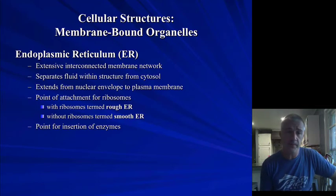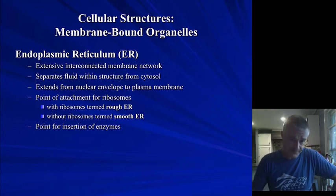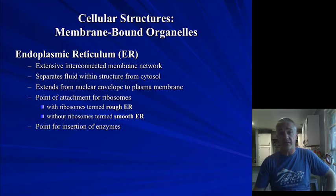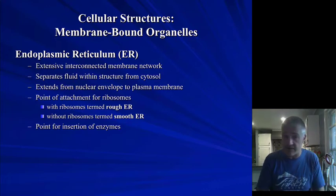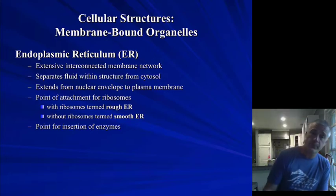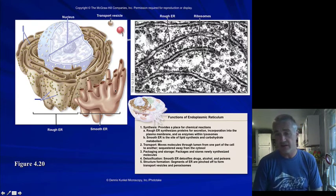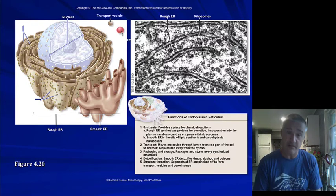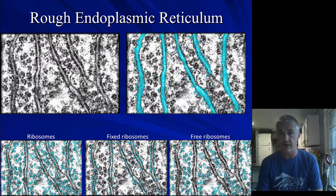The endoplasmic reticulum is found generally around the nucleus in the perinuclear region. If it has ribosomes embedded on the surface, it is the rough endoplasmic reticulum, involved in making proteins generally targeted at the membrane or outside the cell. If it doesn't have ribosomes, it is the smooth endoplasmic reticulum. You can see the electron micrograph — the ones with the bumps are rough ER, and the ones missing the bumps are smooth ER.